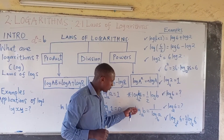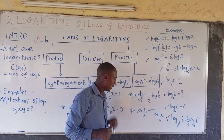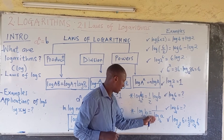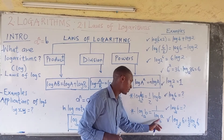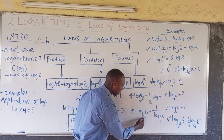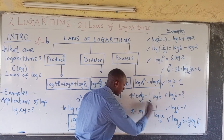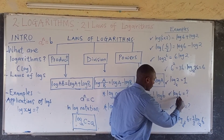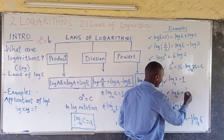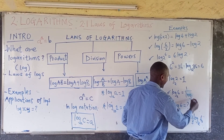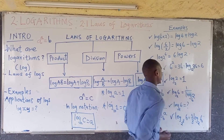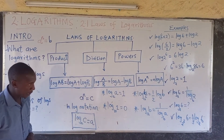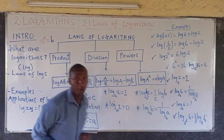Also, log of B to base A can be written as 1 over log of A to base B. Notice that these two numbers interchange, but we also take the reciprocal. As an example, log of 6 to base 2 is equal to 1 over log of 2 to base 6. So these two numbers swap, and that is this law of logarithms.